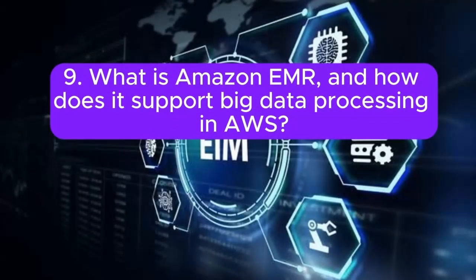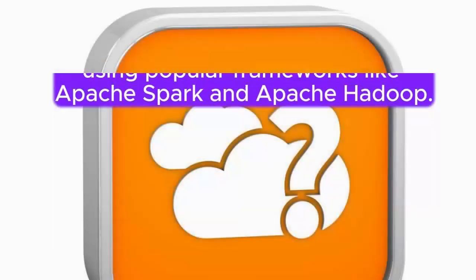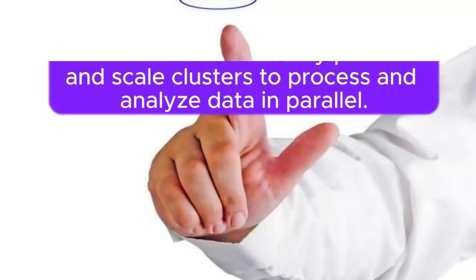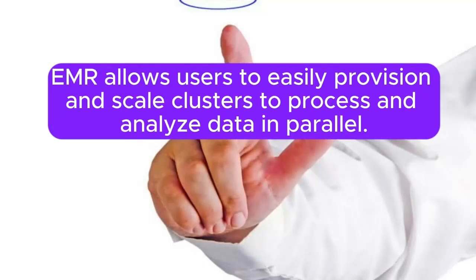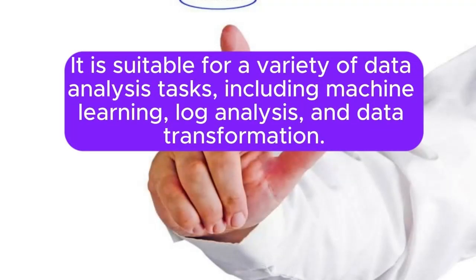9. What is Amazon EMR and how does it support big data processing in AWS? Answer: Amazon EMR (Elastic MapReduce) is a cloud-based big data platform that simplifies the processing of large datasets using popular frameworks like Apache Spark and Apache Hadoop. EMR allows users to easily provision and scale clusters to process and analyze data in parallel. It is suitable for a variety of data analysis tasks, including machine learning, log analysis, and data transformation.